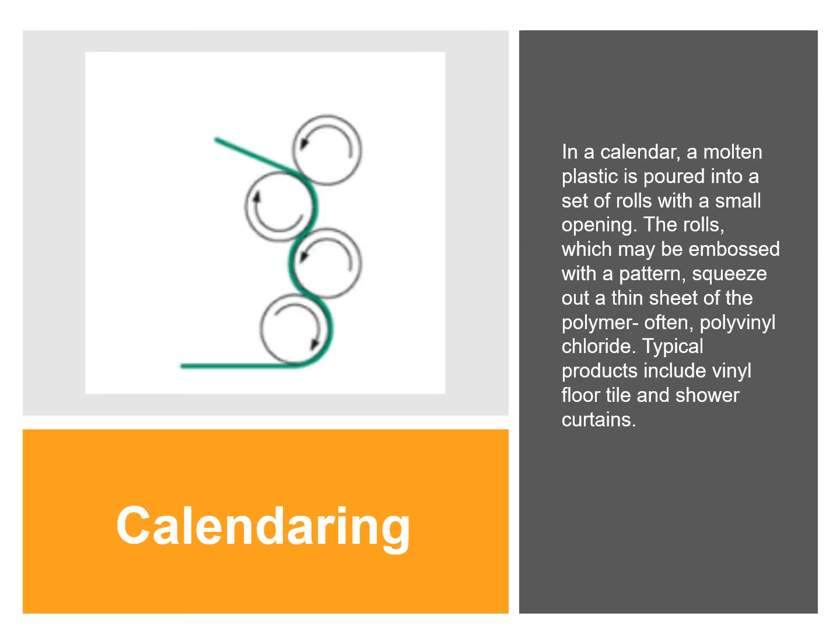For calendaring, molten plastic is poured into a set of rolls with a small opening. The rolls, which may be embossed with a pattern, squeeze out a thin sheet of polymer — often polyvinyl chloride (PVC). Typical products include vinyl floor tiles and shower curtains.